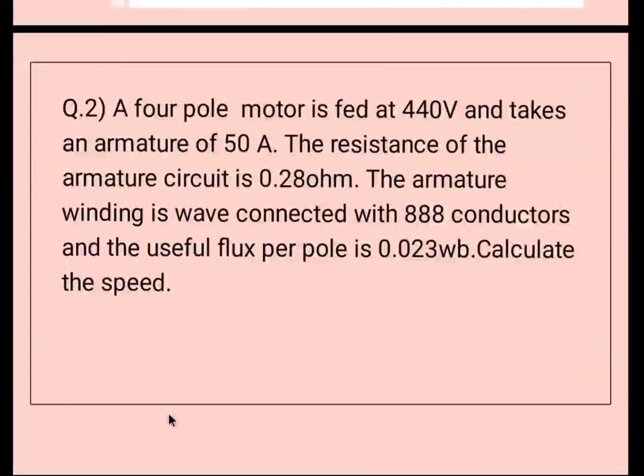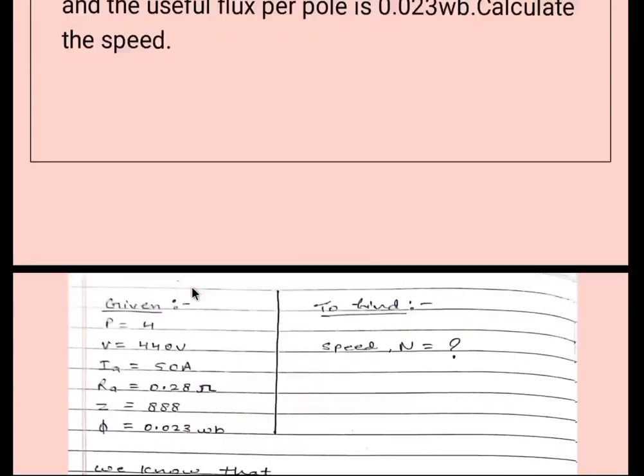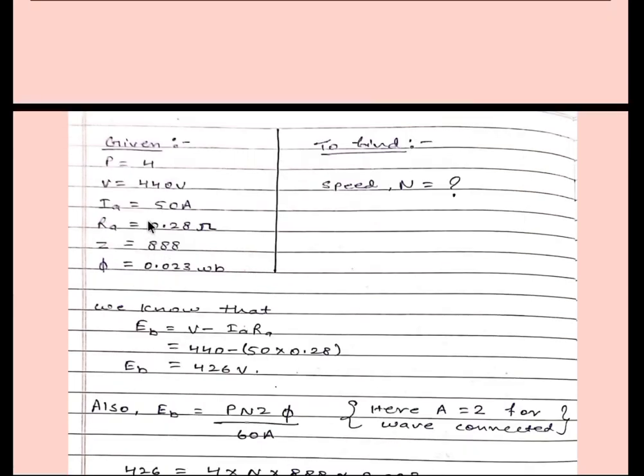Moving to question number two: A four pole motor is fed at 440 volt and takes an armature current of 50 ampere. The resistance of the armature circuit is 0.28 ohm. The armature winding is wave connected with 888 conductors and the useful flux per pole is 0.023 weber. Calculate the speed.